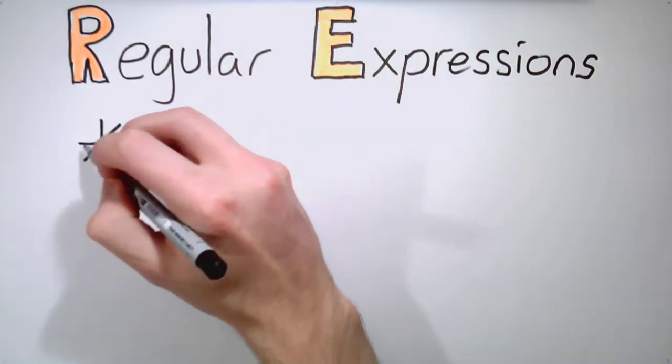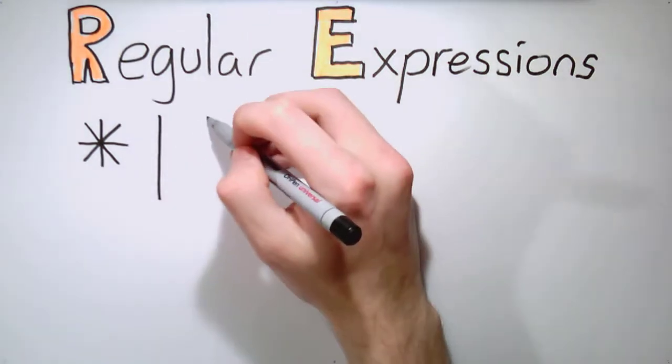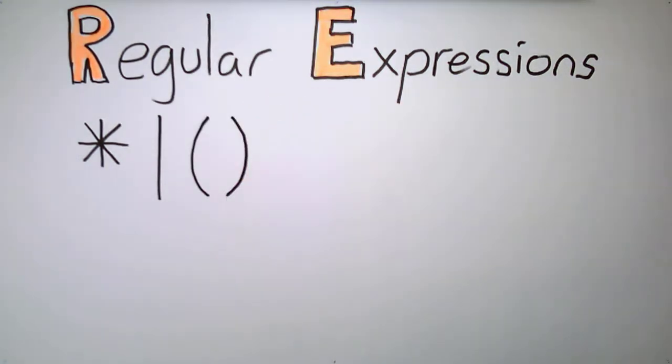They can be defined with combinations of just four symbols: the Kleene star, shown as an asterisk, alternation, a vertical bar, and the open and closed parentheses.